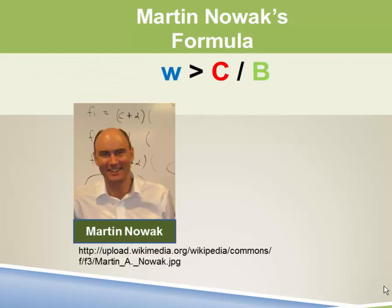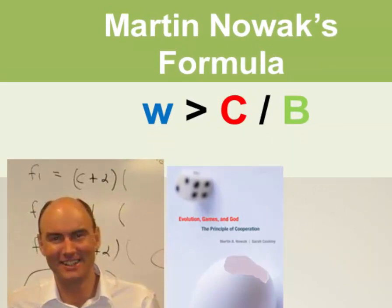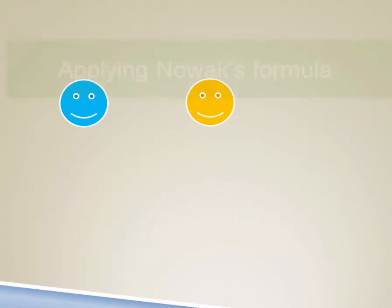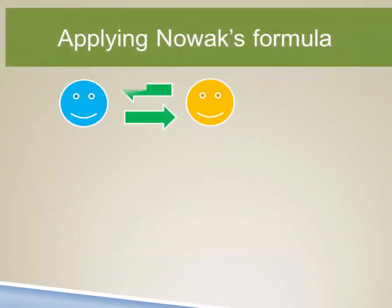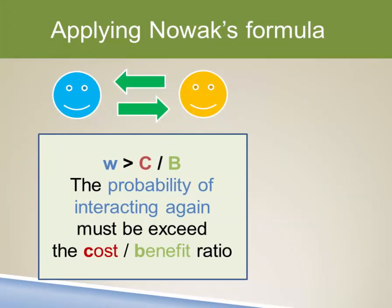Martin Nowak has provided a simple formula: W has to be greater than the cost-benefit ratio. You can find this formula and five others in Nowak's chapter in a book called Evolution Games: The Principle of Cooperation, on page 101. So what does this formula mean? W stands for the probability that two agents will interact again, and Nowak's formula says that in order for cooperation to evolve, that probability has to be greater than the cost-benefit ratio of their interaction.